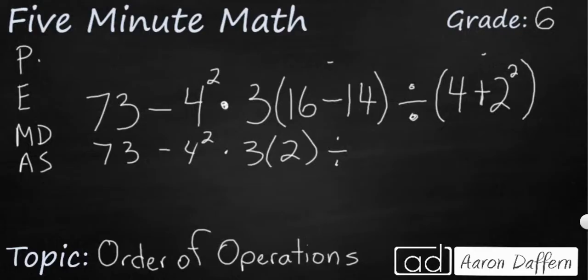This is going to be 4 plus 2 squared. So when you have order of operations within parentheses, you still use the order of operations to figure out what to do first. So within this parentheses right here, my exponent is going to come before my addition. So I need to resolve this exponent. So that's going to be 2 squared. That's going to be 4. So it's going to be 4 plus 4, because that 2 squared makes this 4. So I'm going to end up resolving that into an 8.